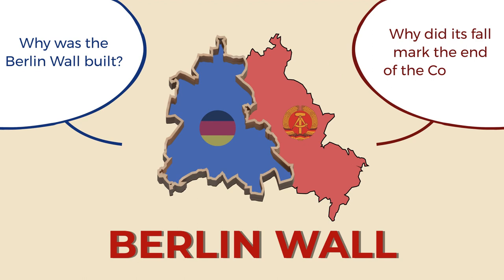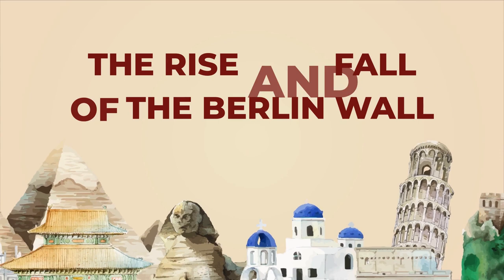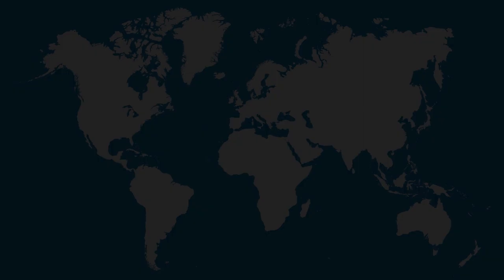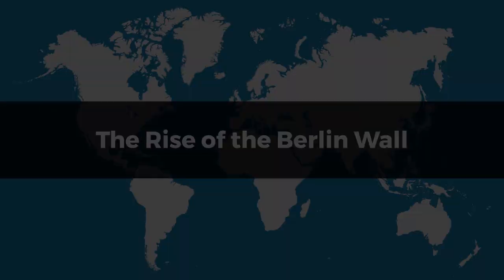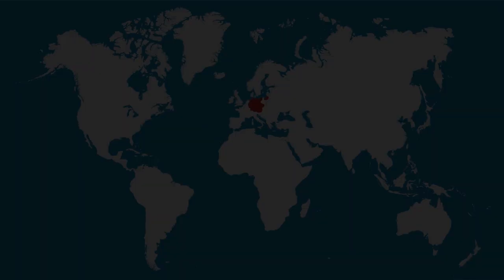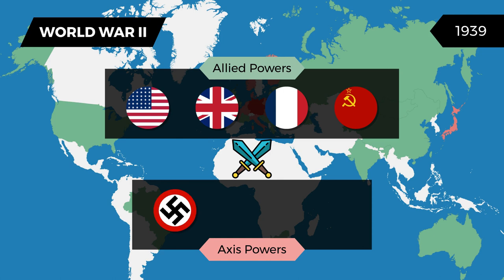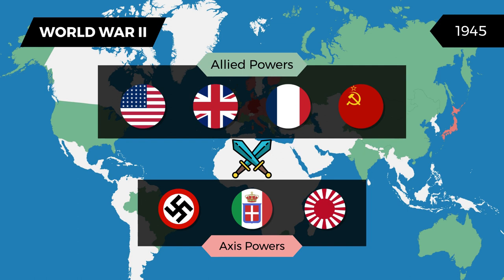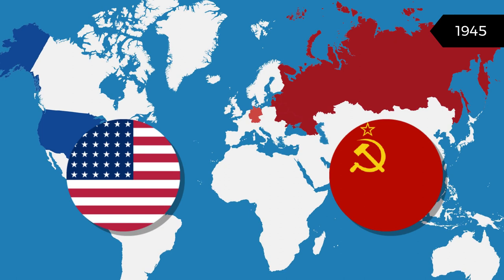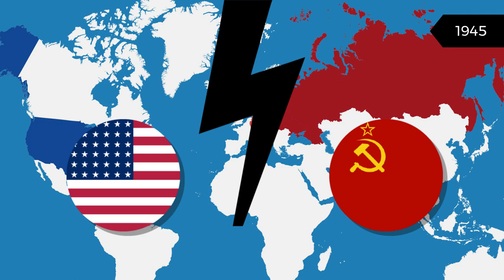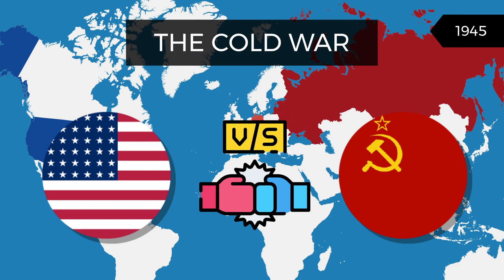So, why was the Berlin Wall built, and why did its fall mark the end of the Cold War? The building of the Berlin Wall dates back to World War II, fought between the Allied powers including the United States, Britain, France, and the Soviet Union, and the Axis powers of Nazi Germany, Japan, and Italy. At the end of the war in 1945, with the victory of the Allies, the Soviet Union and the United States emerged as two opposing superpowers, each wanting to exert its influence in postwar Europe. This deteriorated their wartime alliance and marked the beginning of what became known as the Cold War, and defeated Germany became a focus of Cold War politics.